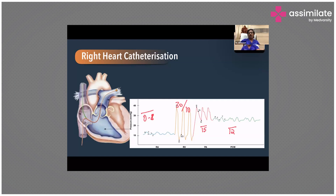The right atrium pressure is normally around 0 to 8 mmHg. In the right ventricle, systolic pressure is around 30 and diastolic is 0 to 10 mmHg. Mean pulmonary artery pressure should be around 15 mmHg, and pulmonary capillary wedge pressure is around 10 to 12 mmHg. An easy way to remember is 10, 20, and 30 — where 10 is pulmonary artery diastolic, 20 is mean pressure, and 30 is systolic — though the normal mean is now revised down to 15.